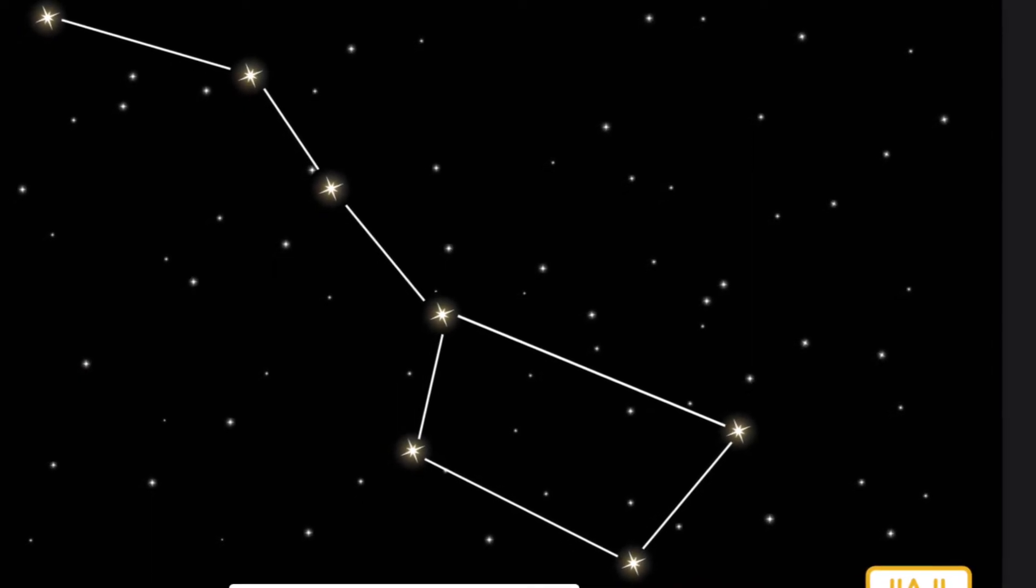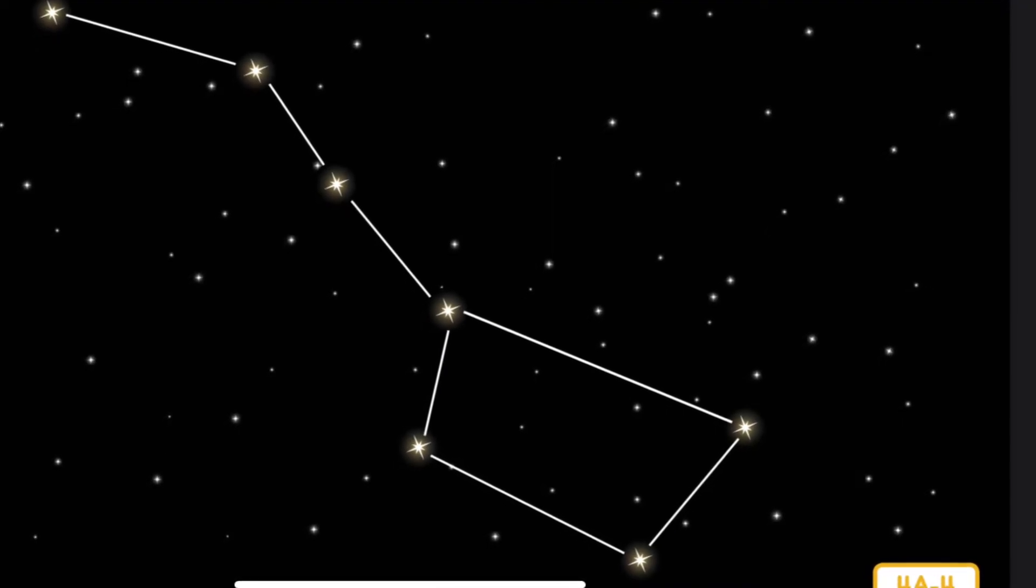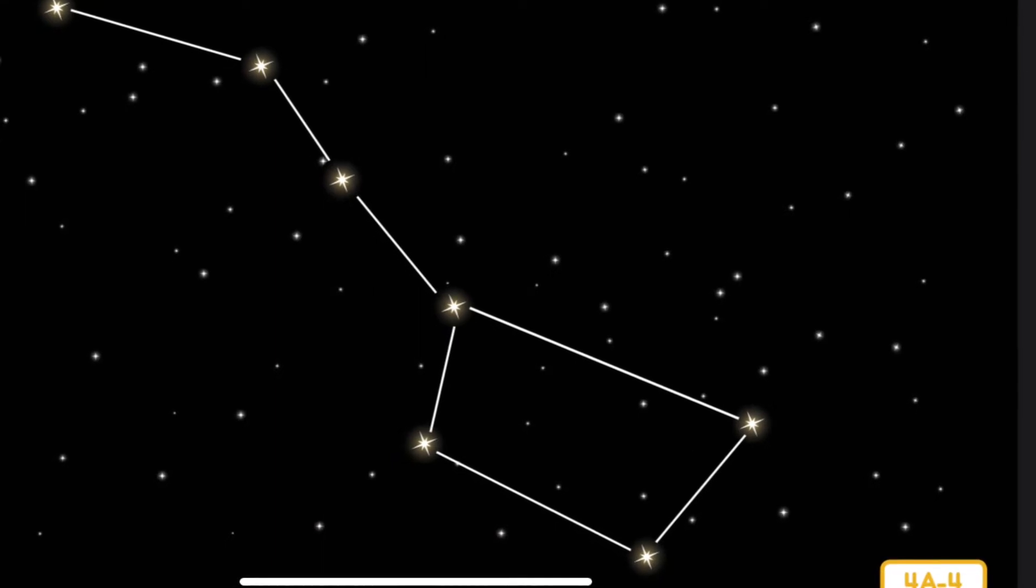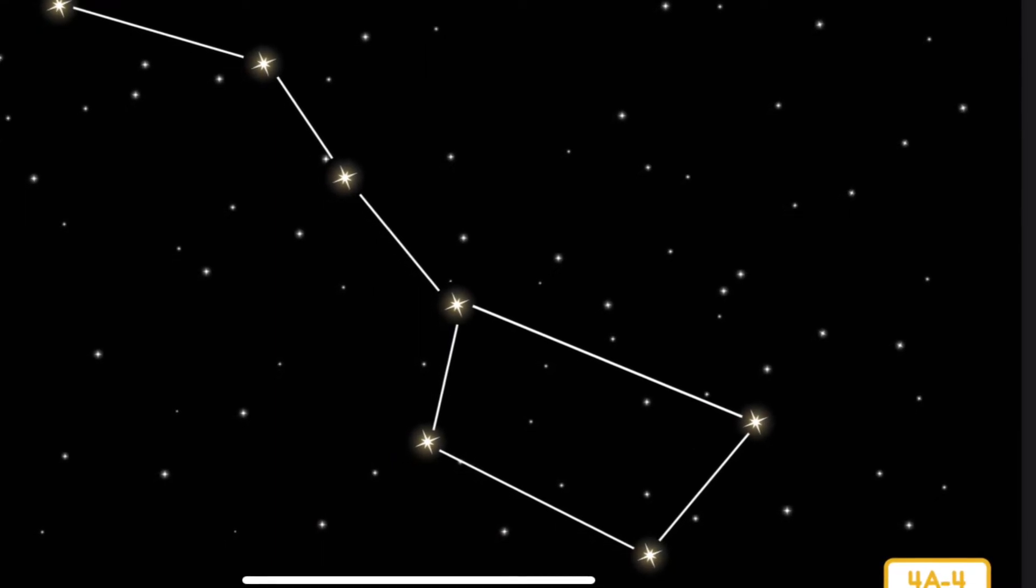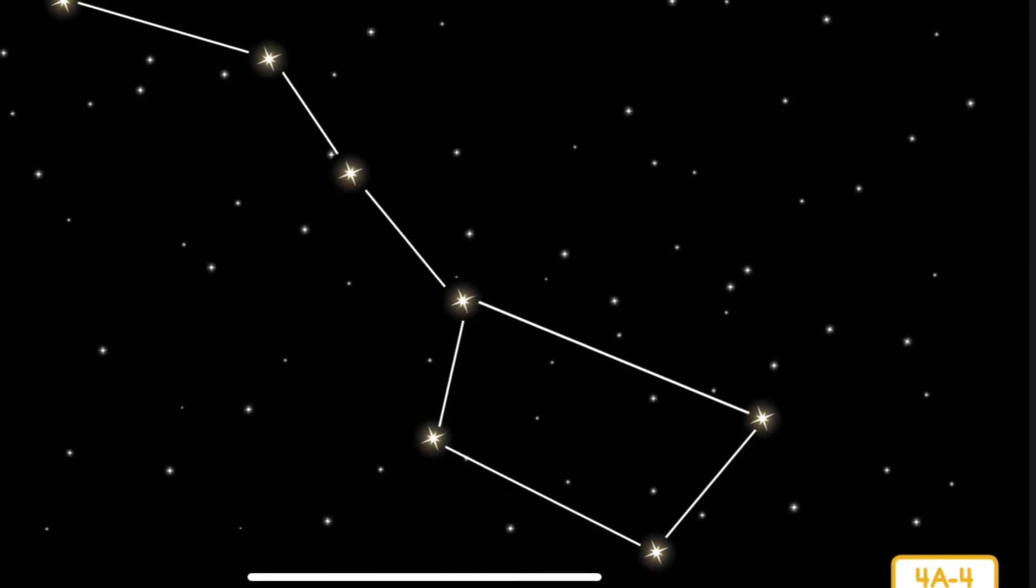Sometimes the Big Dipper looks right side up, sometimes it looks upside down, and sometimes it appears to be standing on its handle. That is not because the Big Dipper moves, but because the Earth is rotating on its axis and orbiting around the sun.